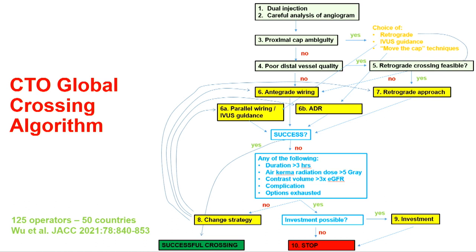The 10-step Global CTO Crossing Algorithm is published in JACC. It gives you a framework — you don't have to follow the steps verbatim; it's a blueprint and a way to think about CTOs. The more experience you get, the more often you'll deviate from it, but it helps create the frame of mind that can help you be successful and safe.